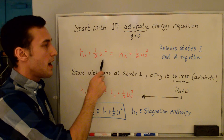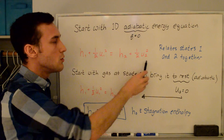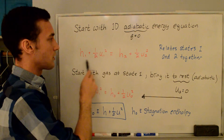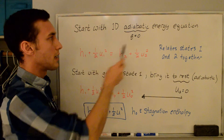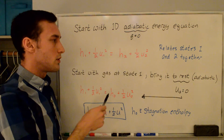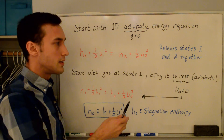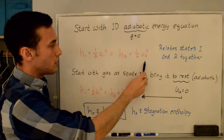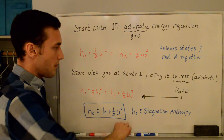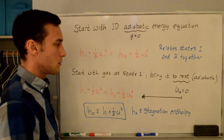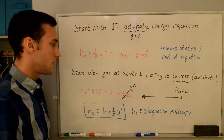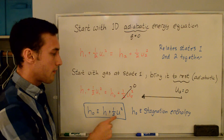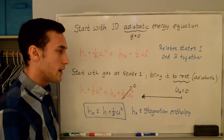If we start with a gas at state one and then bring it to rest — so state two is just bringing this gas all the way to rest, no more velocity — it's adiabatic inherently because this adiabatic energy equation does not include the Q term. We designate this arbitrary rest state with the naught designation. Since we've brought it to rest, the velocity is equal to zero, so that term goes to zero. What we have is the stagnation enthalpy defined as the static enthalpy plus one half velocity squared: H naught = H + ½V².